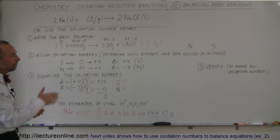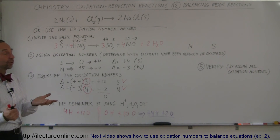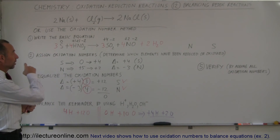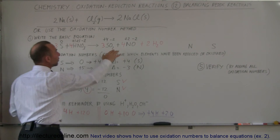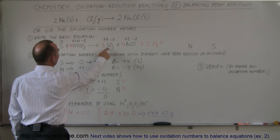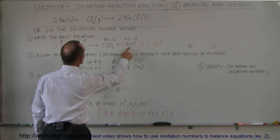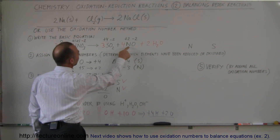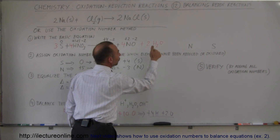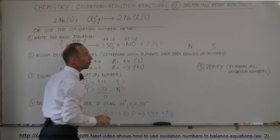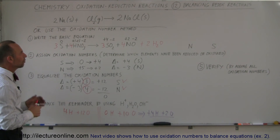The final step is to verify by checking that all numbers are correct. Let's check: three sulfurs on the left, three sulfurs on the right — balanced. Four nitrogens on the left, four nitrogens on the right — balanced. Twelve oxygens on the left; six plus four plus two equals twelve oxygens on the right — balanced. Four hydrogens on the left, four hydrogens on the right — balanced.